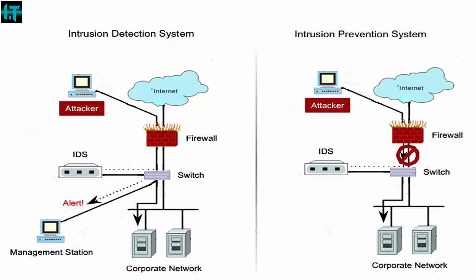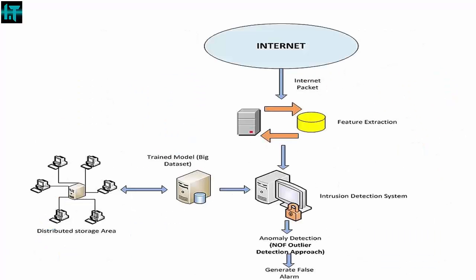An intrusion detection system installation on a network serves much the same purpose as a burglar alarm system installed in a house. IDS may be used in conjunction with a firewall, which aims to regulate and control the flow of information into and out of a network. A firewall can be thought of as a fence or security guard placed in front of a house.